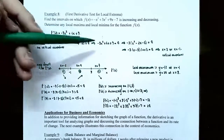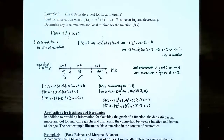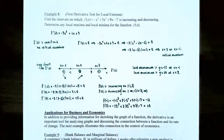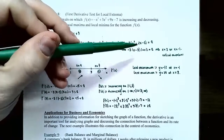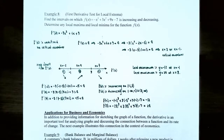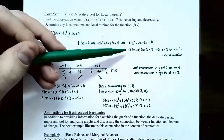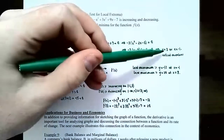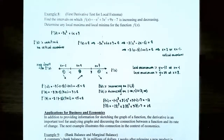Setting f'(x) = 0: −3x² + 6x + 9 = 0. Factor out −3: −3(x² − 2x − 3) = 0. Find two numbers that multiply to −3 and add to −2: they are −3 and 1. So: −3(x − 3)(x + 1) = 0. Since the product equals zero, one factor must be zero: −3 can't be zero, so x − 3 = 0 gives x = 3, and x + 1 = 0 gives x = −1. Two critical numbers: x = −1 and x = 3.